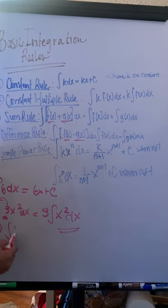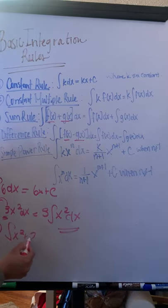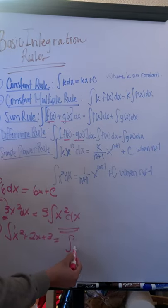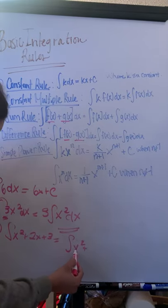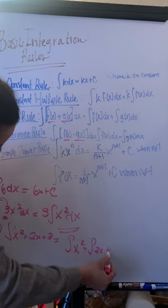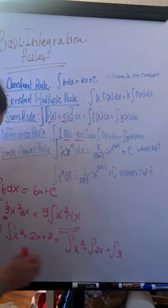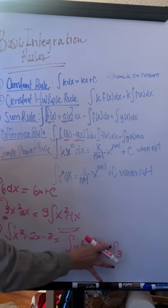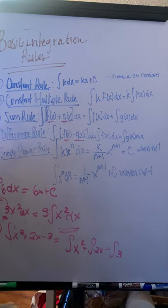For example, the integral of x squared plus 2x plus 3 can be separated into the integral of x squared plus the integral of 2x plus the integral of 3. If these were minuses, the difference rule applies.